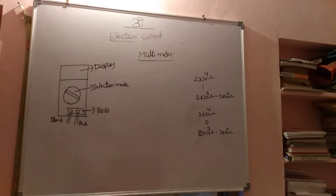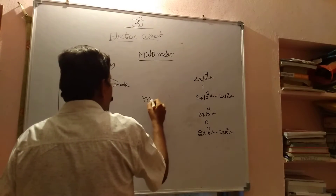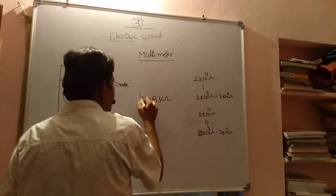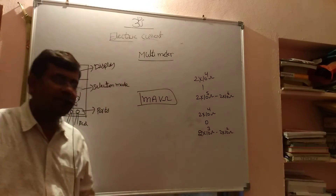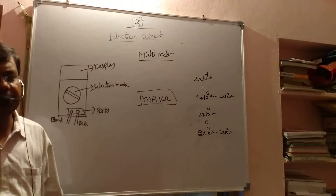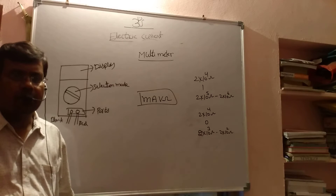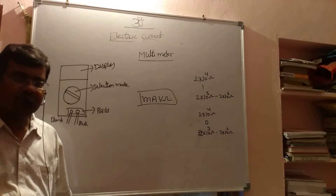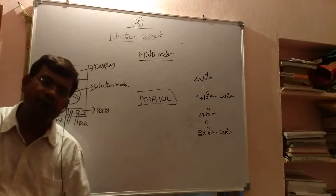Now we are discussing about the multimeter. Multi means more, so this multimeter we are using as a milliammeter, voltmeter, and resistance meter. By using this multimeter we are measuring electric current, potential difference, and resistance also. So due to that it is called multimeter.